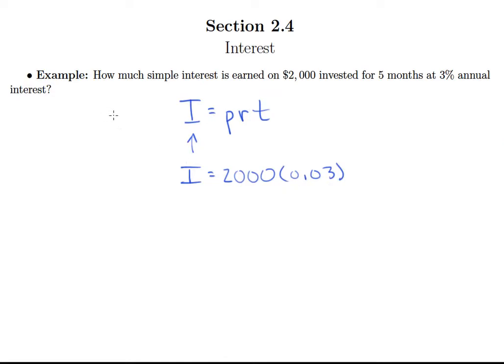Now we got to be a little bit careful here, we have to read carefully. So we see this five here for the time, five months, so it's tempting to put five right here for T, but remember that T is always, always in years.